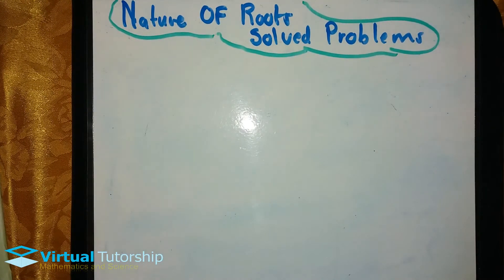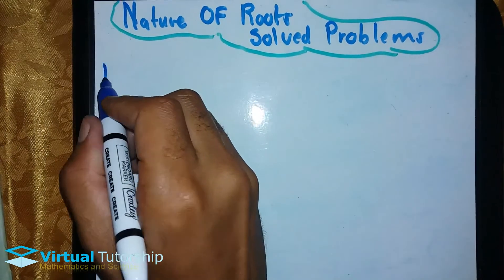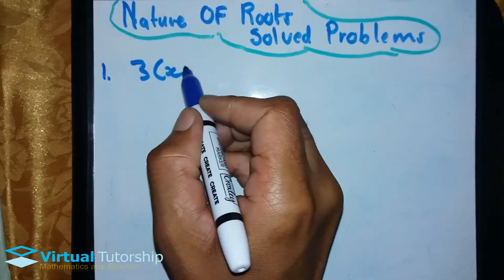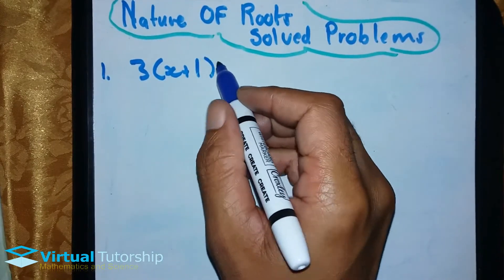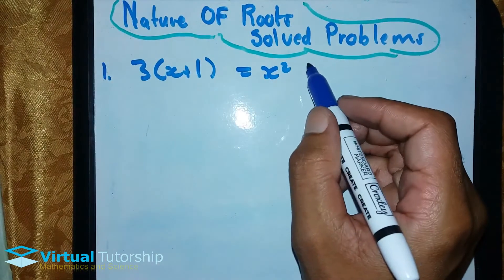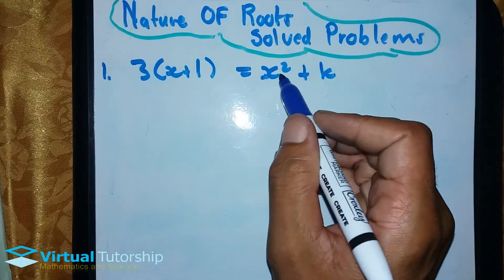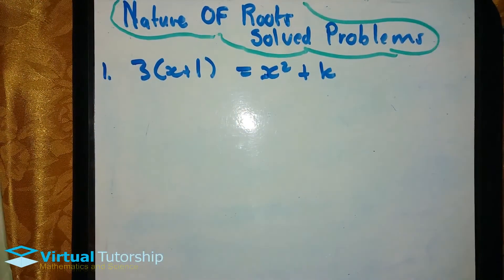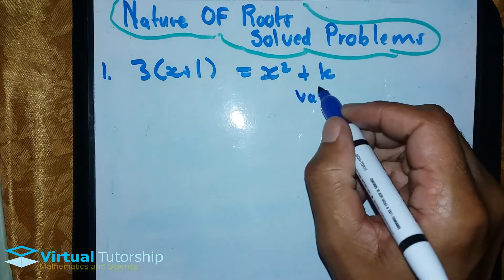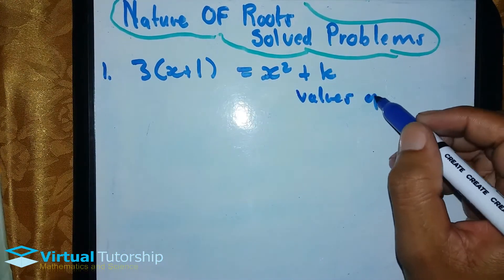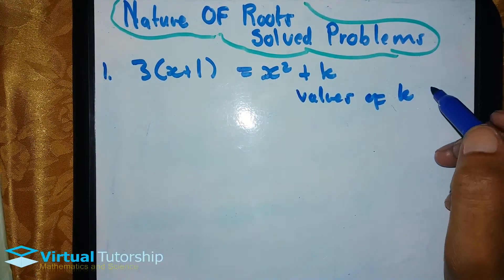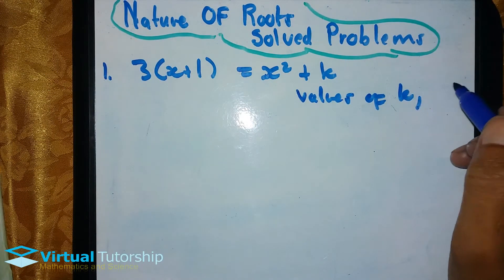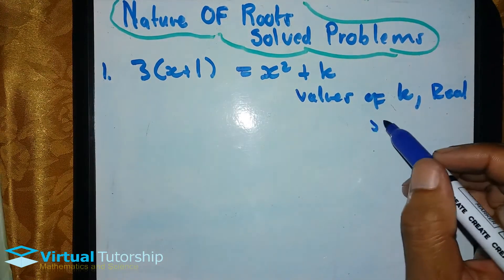Okay, so nature of the roots. We solve problems under this topic. First example: 3x plus 1 equals x squared plus kx squared plus k. The question is: for which values of k does this equation have an even number of real solutions?